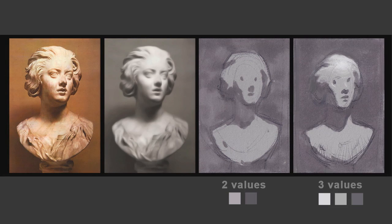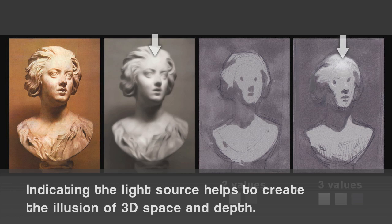And finally, to make a three-value statement, I kept the same shapes as our two-value statement but added a third, lighter value near the top of the form — at the forehead and the hair — which is the area closest to the light. The addition of this third value helps us model the form and show the direction of the light casting on this form, which adds to the feeling of three-dimensional space and depth.